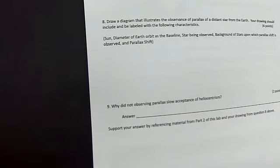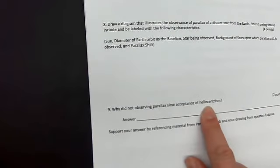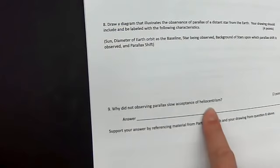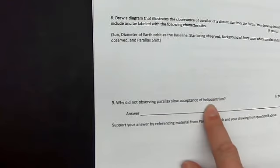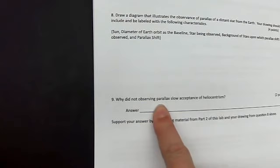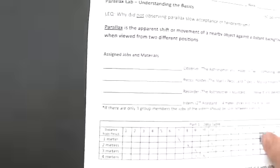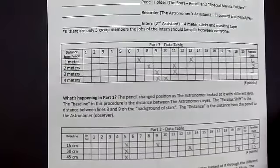Question nine: why did not observing parallax slow the acceptance of heliocentrism? Remember, in heliocentrism the sun is in the center and the Earth orbits the sun. If they couldn't see parallax happening, why did that cause heliocentrism to be rejected? What's the connection? That's it — if you have any additional questions you can ask me personally or by email. Have a good day.